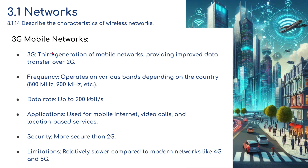3G, the third generation of mobile networks, provided improved data transfer over 2G. It operates on various frequency bands depending on the country — 800 MHz, 900 MHz, etc. — with data rates up to 200 kilobits per second. It's used for mobile internet, video calls, and location-based services, and is more secure than 2G. However, it is relatively slower compared to modern networks like 4G and 5G.